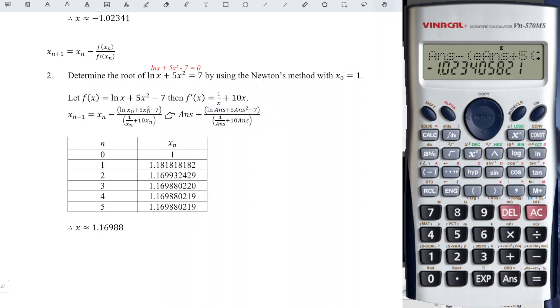So initiate the value 1 and press equal. Then replace all the x with the answer button. So we have answer minus bracket, long answer, plus 5, answer, square, minus 7. Close bracket.